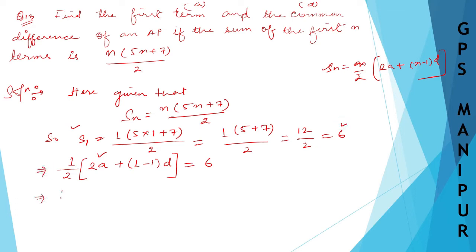So, 1 by 2, 2 into A, 2A plus 1 minus 1, it is 0, 0, D. Which will be 6, and I can write down this one as 1 by 2 into 2A plus 0, D, it is simply like 0, D is of no use. It is equal to 6, now 2, 2 cancel, and I got A is equal to 6.